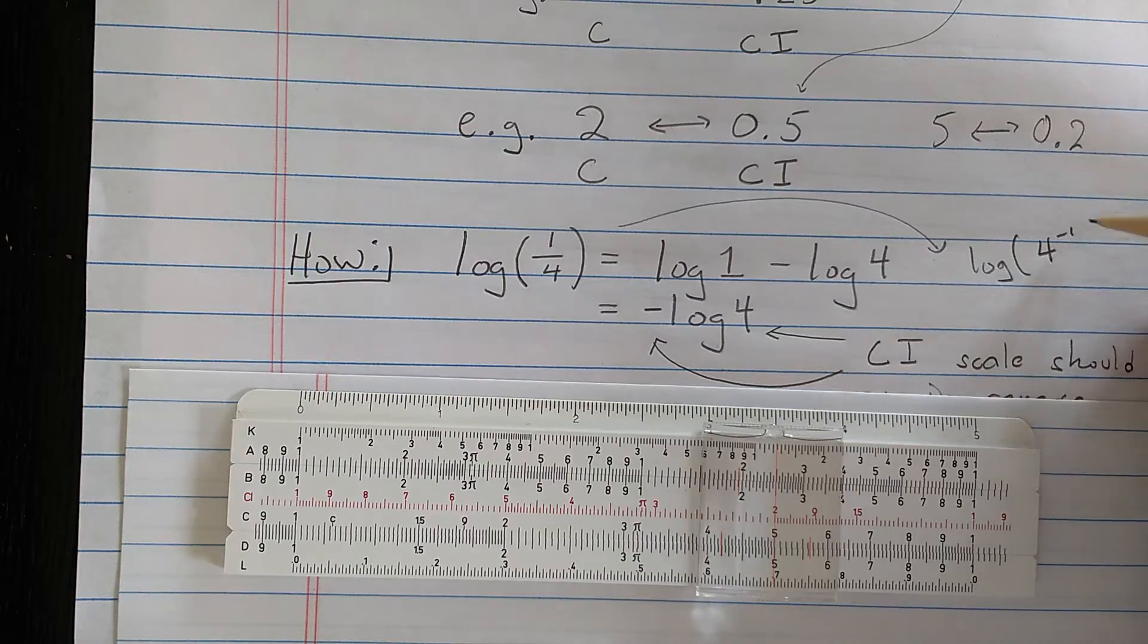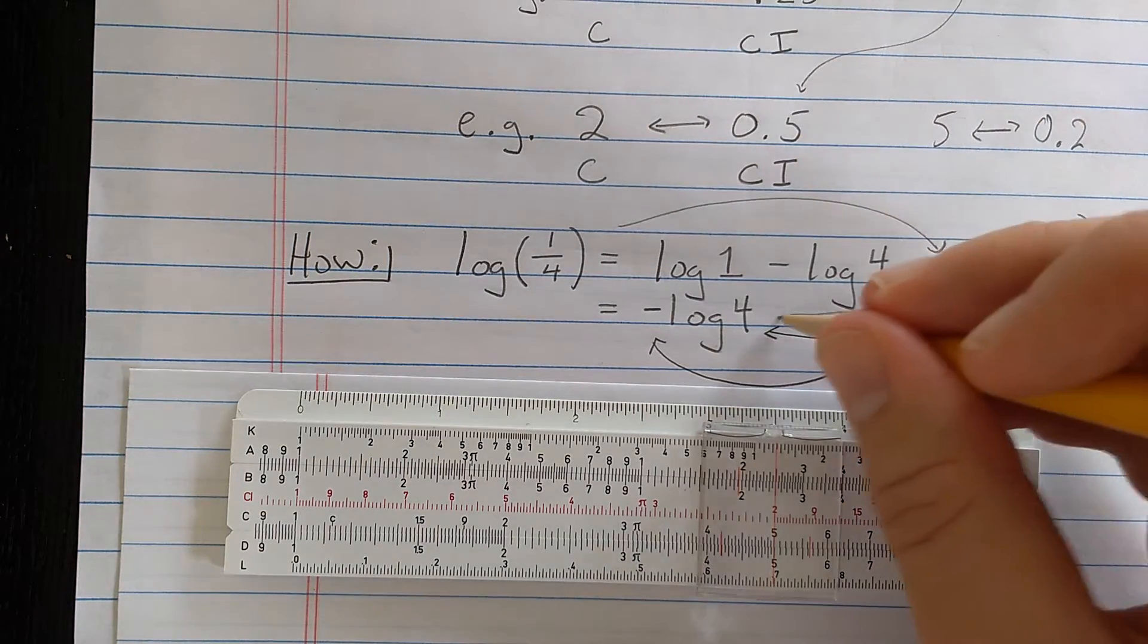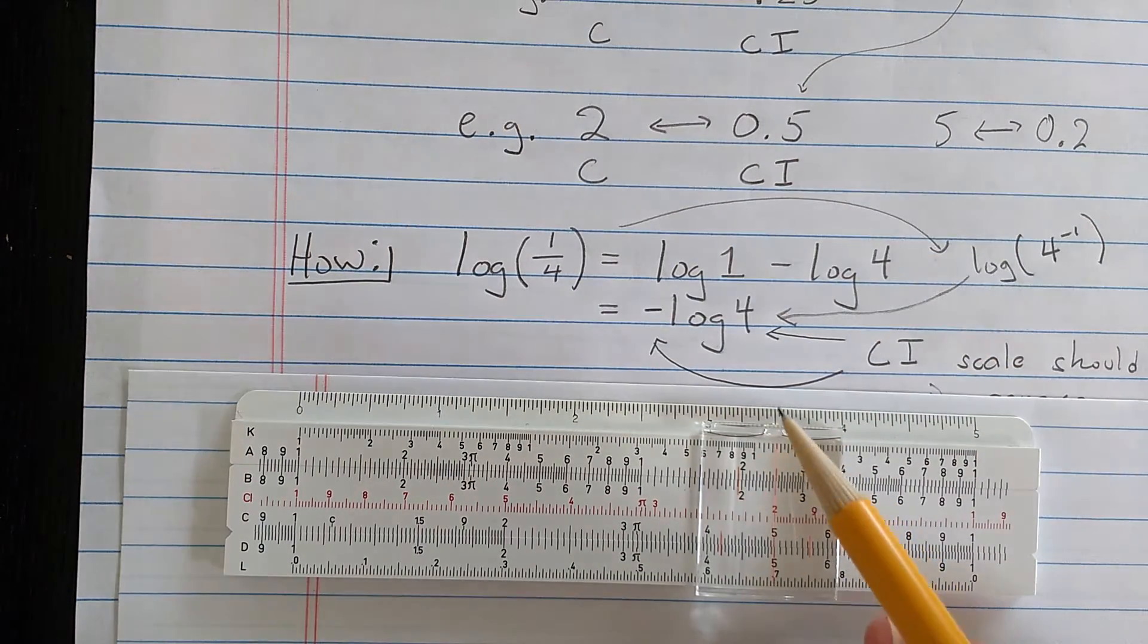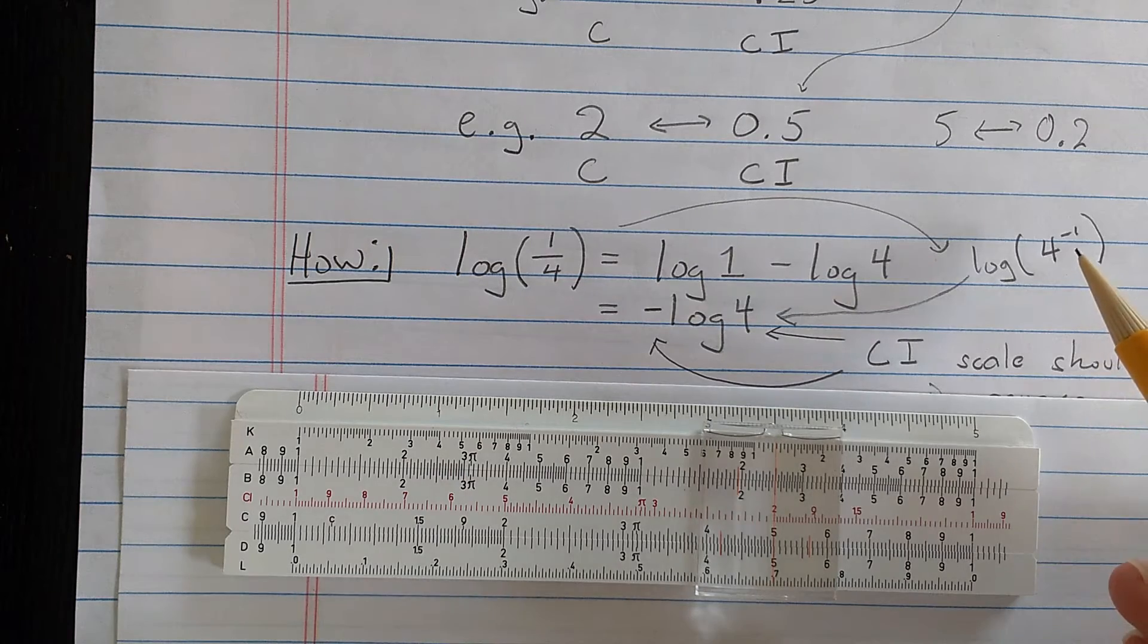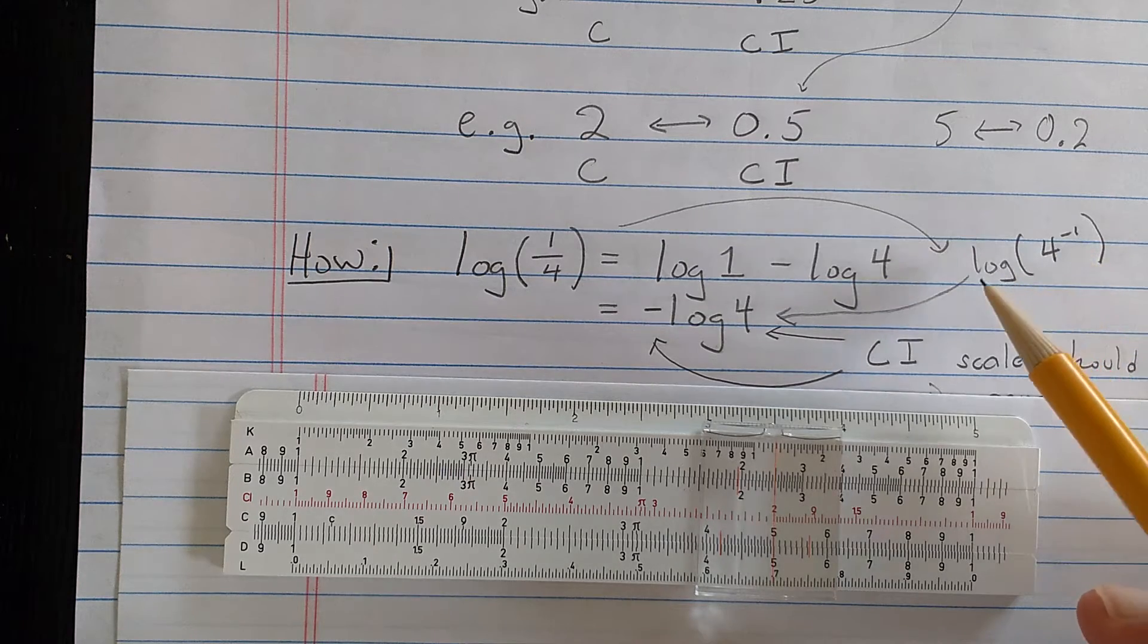Another way to think of this is that log of 1 over 4 is the same as log of 4 to the minus 1. And in both cases, you see that I get minus log of 4. We have another log rule that that exponent could come outside.